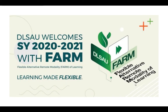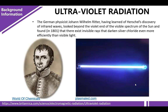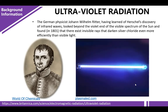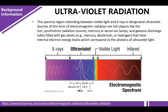This presentation is powered by DLSAU FARM flexible alternative remote modality of learning. The German physicist Johann Wilhelm Ritter, having learned of Herschel's discovery of infrared waves, looked beyond the violet end of the visible spectrum of the Sun and found in 1801 that there exist invisible rays that darken silver chloride even more efficiently than visible light.